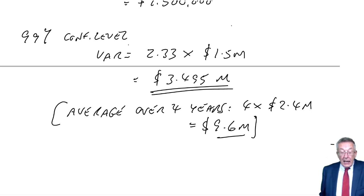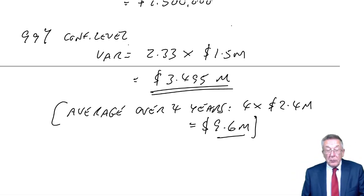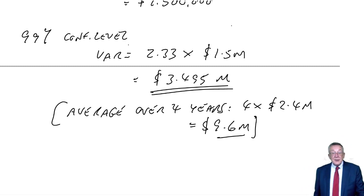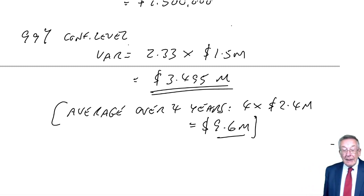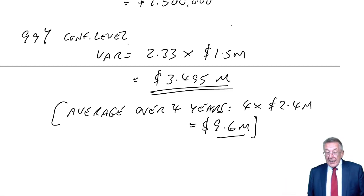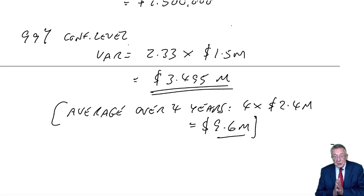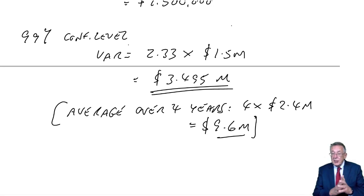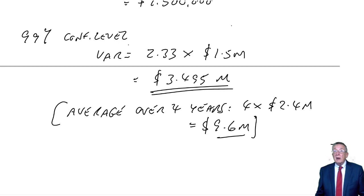And there we are. Just to remove any remaining uncertainty: whenever you're asked for value at risk, as in example three, there are no more complications. You will be told the standard deviation — or possibly the variance — and almost certainly the standard deviation. You'll be told the average and the confidence level required.